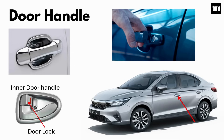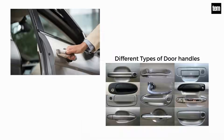Door handle. Door handles help the driver or passengers to get in or out of the car. Door handles contain door locks, and we use them to unlock the car from outside or inside. Depending on the model of the car, there are different types of door handles available.